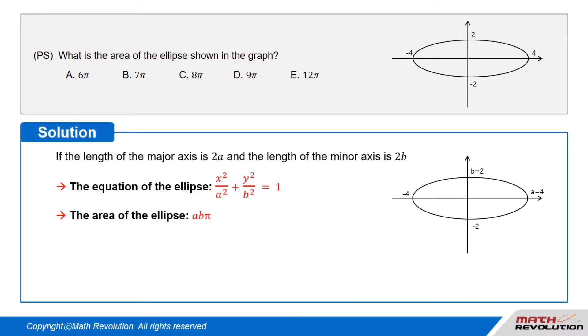Solution. The ellipse passes through a equals 4 and negative 4, and b equals 2 and negative 2. If the length of the major axis is 2a and the length of the minor axis is 2b, the equation of the ellipse is x²/a² + y²/b² = 1. The area of the ellipse is ab·π.